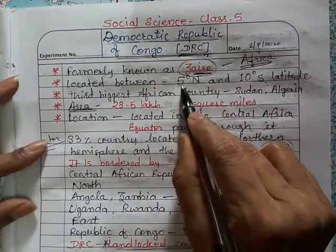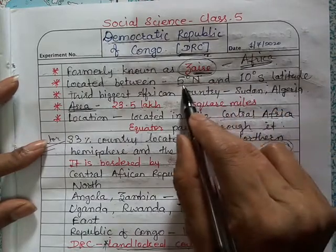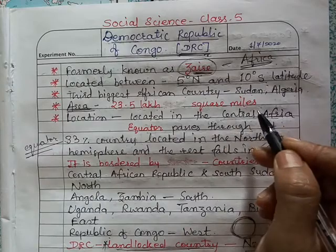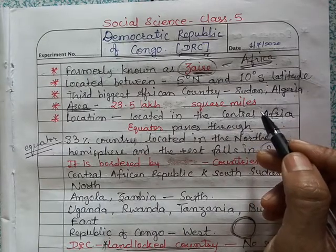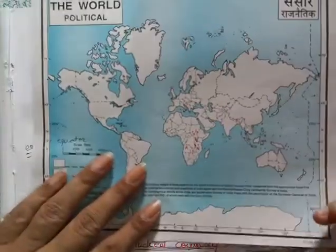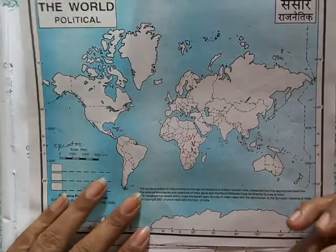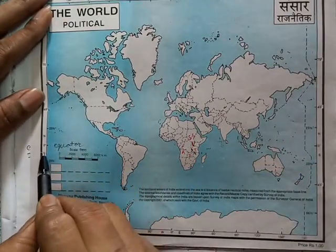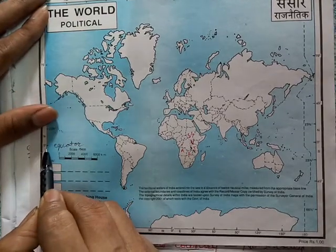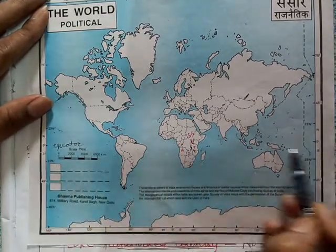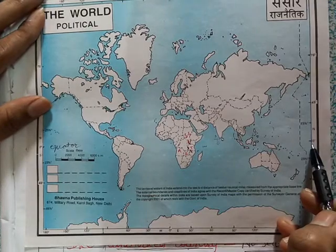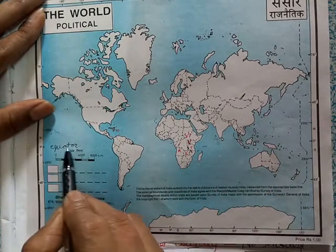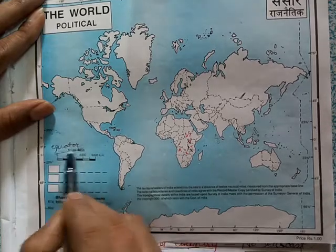We have already learnt in the previous videos how to identify a place on the earth. Here I have a world political map. You can see the 0 degree latitude on both sides. If you draw a line from 0 to 0, you will get the equator.